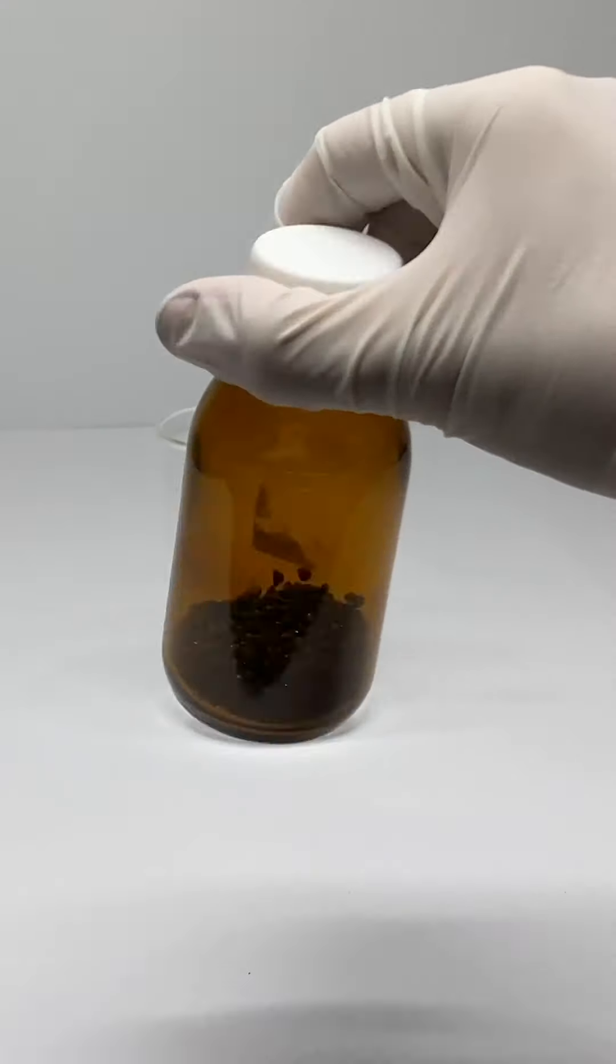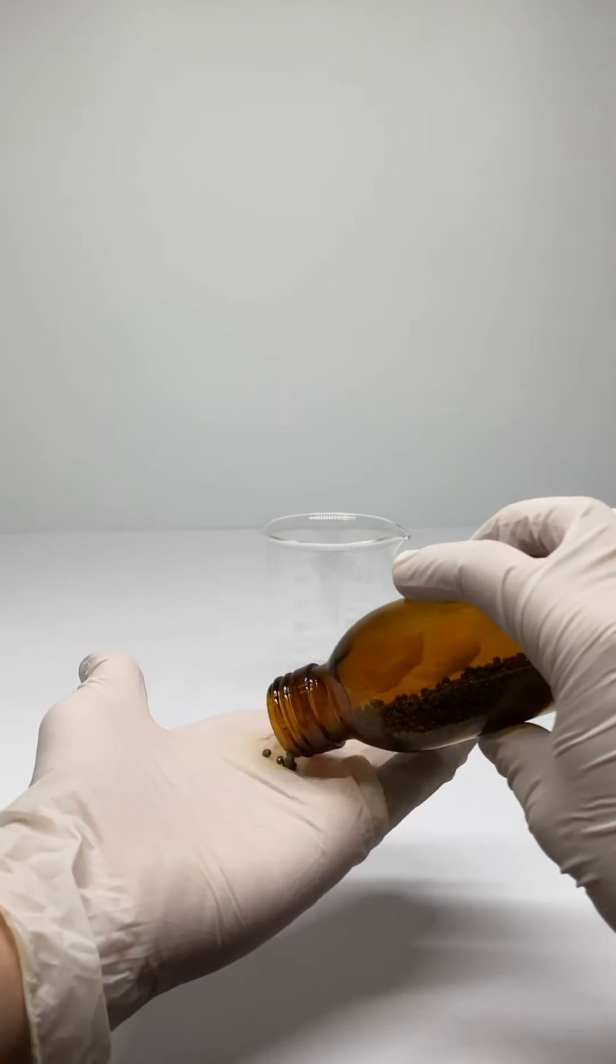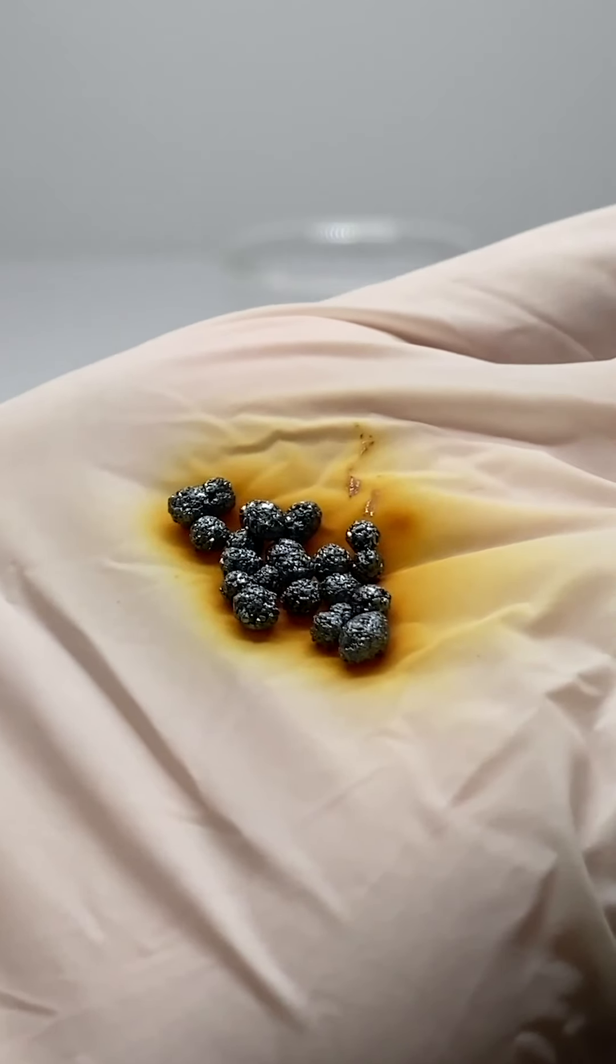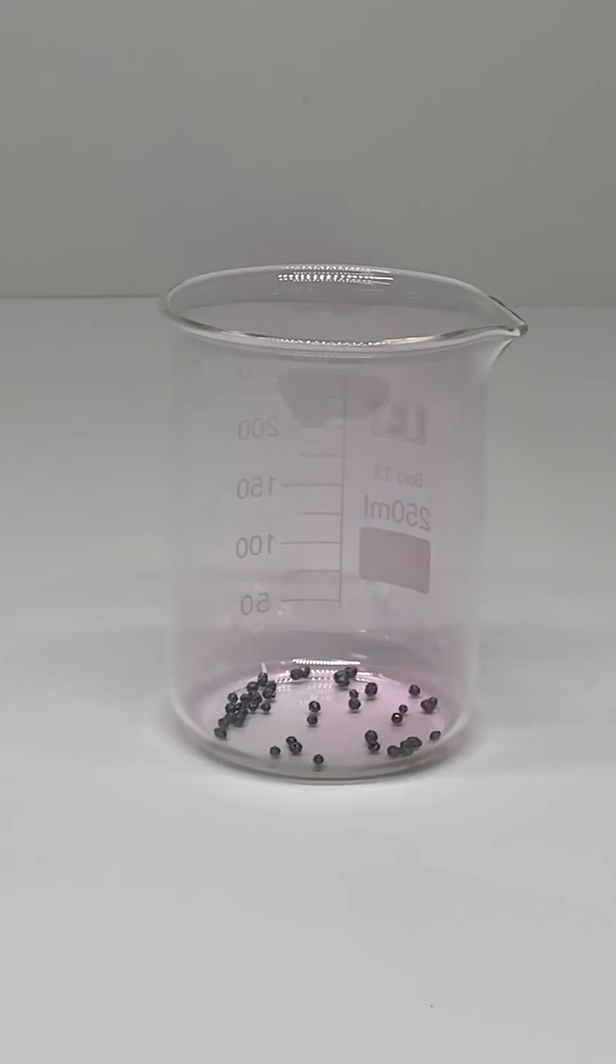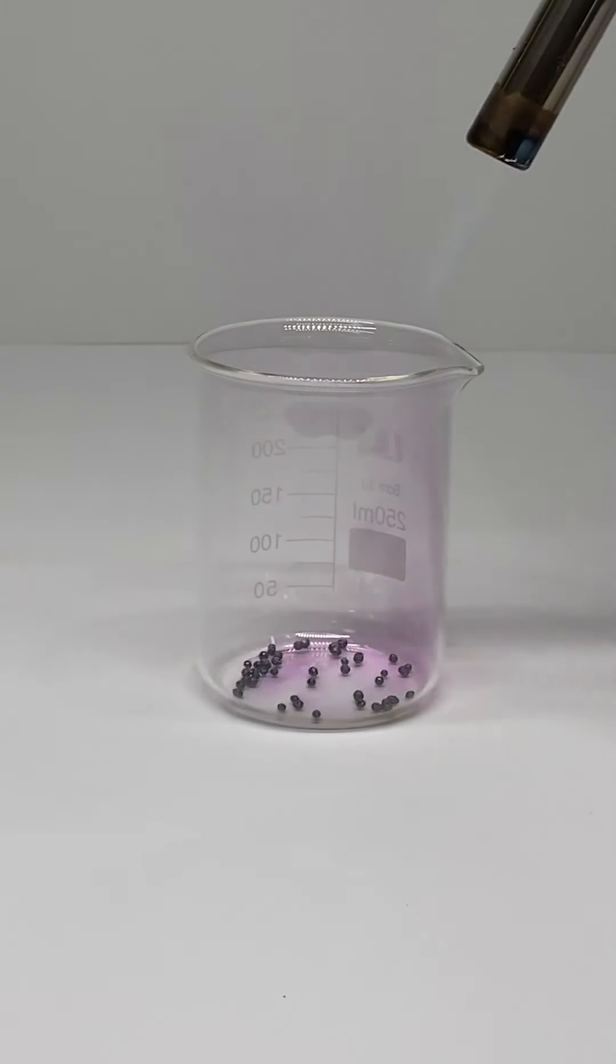This is iodine, one of my favorite elements. It stains almost everything it touches, it's toxic and it has a strong tendency to turn into gas. Even at room temperature you can see the purple fumes and with a little more heat it looks like that.